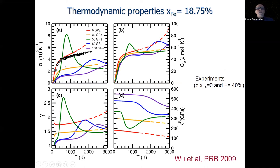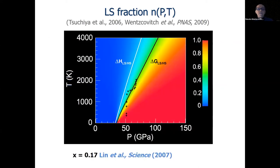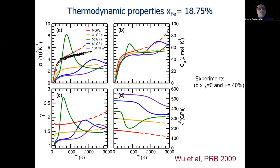The thermal expansion coefficient shows remarkable behavior. At 0 GPa, the quasi-harmonic approximation agrees quite well with experiments. At 30 GPa, we are still in the high-spin state and the thermal expansivity is normal. But at 50 GPa, we start in the low-spin region, and by increasing temperature we move into the mixed spin region, then into high-spin. Consequences: when you excite spins, the iron octahedron expands, and you have an absolutely anomalous thermal expansion coefficient. This anomaly moves to higher pressures and broadens.